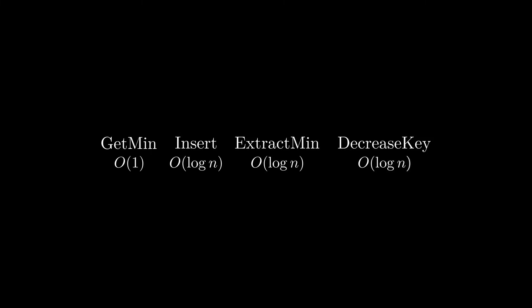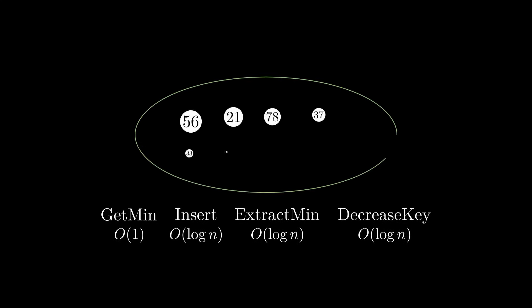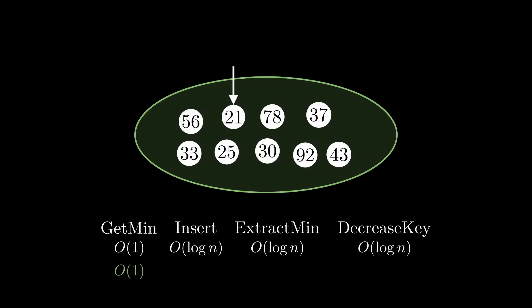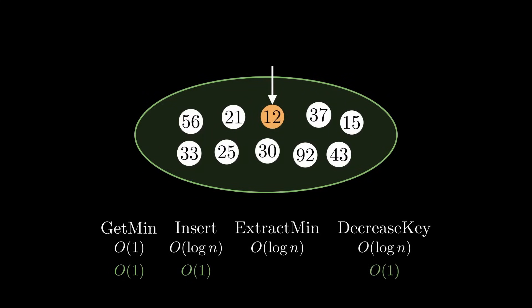Let's imagine implementing the simplest, laziest priority queue possible. A priority queue is just a collection of values. We definitely want direct access to the smallest element, allowing us to implement getMin in constant time. To insert an element, we just add it to our collection, then check if the new element is smaller than the current minimum and update it if necessary. In theory, there is nothing stopping us from implementing insert in constant time as well. For DecreaseKey, as long as we get access to the element via a hash table, we can just decrease its key in place and check if we have a new smallest element — also doable in constant time.